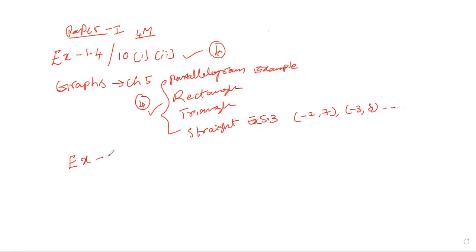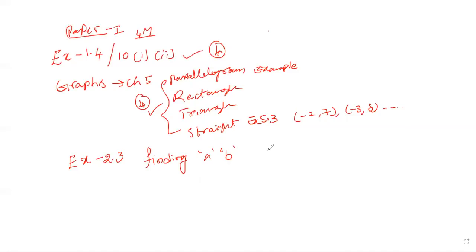The 4 marks should be covered. Then exercise number 2.3 is equivalent. We have to check 2.3 to find A and B — I think there are some questions. Finding small a, small b. This is why you have to attempt for 4 marks, and you have to attempt 2 marks.